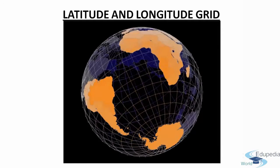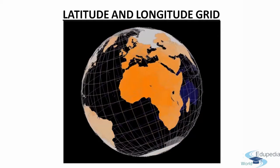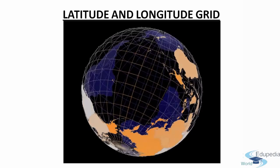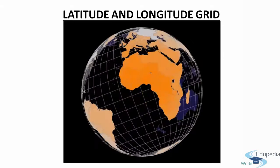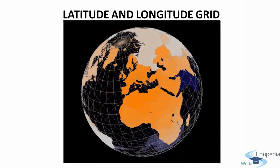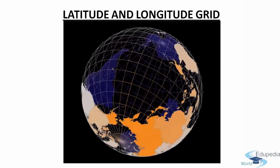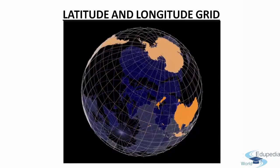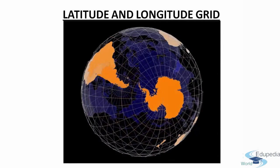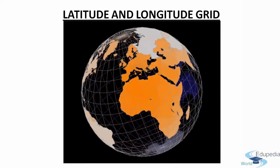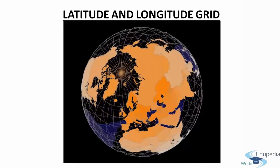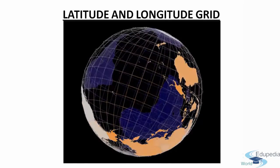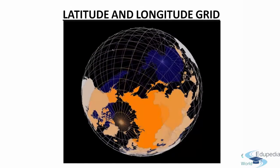By knowing latitude and longitudes, you can easily locate any place on the earth. But in order to locate a place, we need to know its exact longitude and latitude. The location is the place where these two lines intersect, and it is unique for every place on earth.